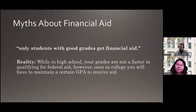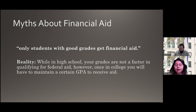Another myth: my parents make too much money, so I won't qualify for aid. The reality is there's no income cutoff to qualify for any federal student aid. At the very minimum, you'll look at unsubsidized loans. Also, only students with good grades can get financial aid — while you're in high school, grades are not a factor in qualifying for any federal aid. However, once you are in school, you do have to maintain a certain GPA to receive and retain eligibility for financial aid.